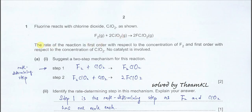In this question, fluorine is first order and chlorine dioxide is also first order — so both are first order. You need to follow the information given in the question, and then propose the mechanism in Part A1.